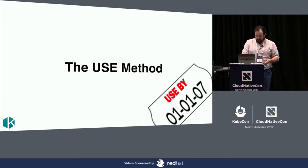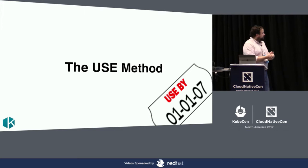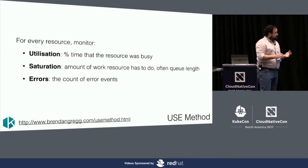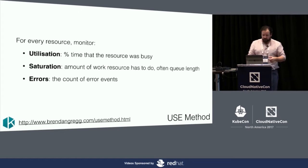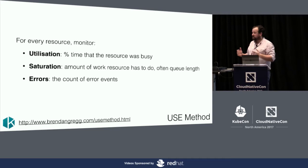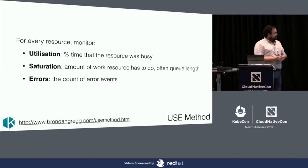So to start with, the USE method. This was invented — or at least coined — by a chap called Brendan Gregg, and defines three things. For every resource in your system, you're going to monitor the utilization, the saturation, and the errors. Brendan has an absolutely excellent de facto web page that describes this in incredible detail, and I'm just going to lightly skim through it. Utilization: how much wall-clock time was the resource busy for as a percentage? Saturation: kind of how much work did this thing have to do?